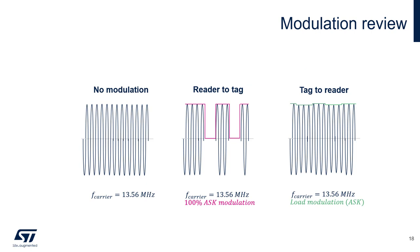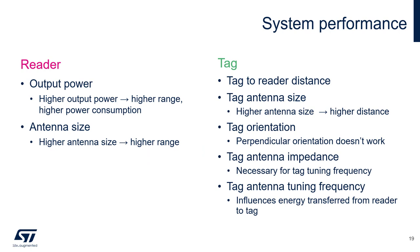To review the modulation: the reader generates a 13.56 MHz signal; the signal is taken by the tag, rectified, and used to power itself up. Then the reader modulates the 13.56 MHz carrier to communicate to the tag. The tag then modulates its impedance so that it creates load modulation on the carrier frequency, and this is decoded by the reader. Several factors affect system performance. On the reader side, more output power generates more field, which equates to longer read range, but also higher power consumption. A larger antenna will also yield longer read range. Performance factors on the tag side include the distance between the reader and the tag, the tag antenna size, tag orientation, tag antenna impedance, and tag antenna tuning frequency.